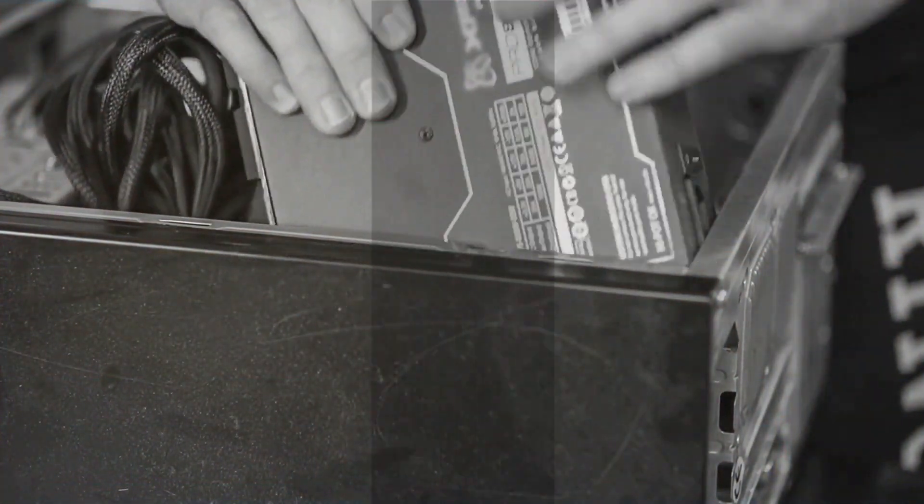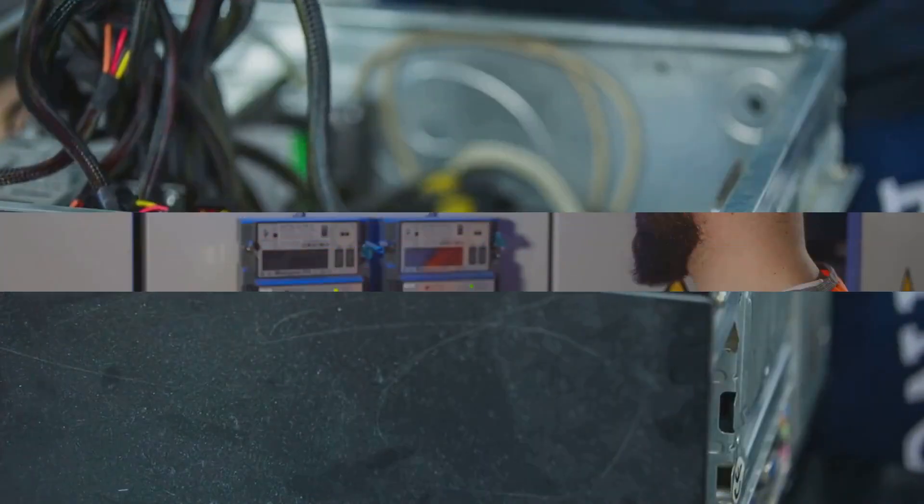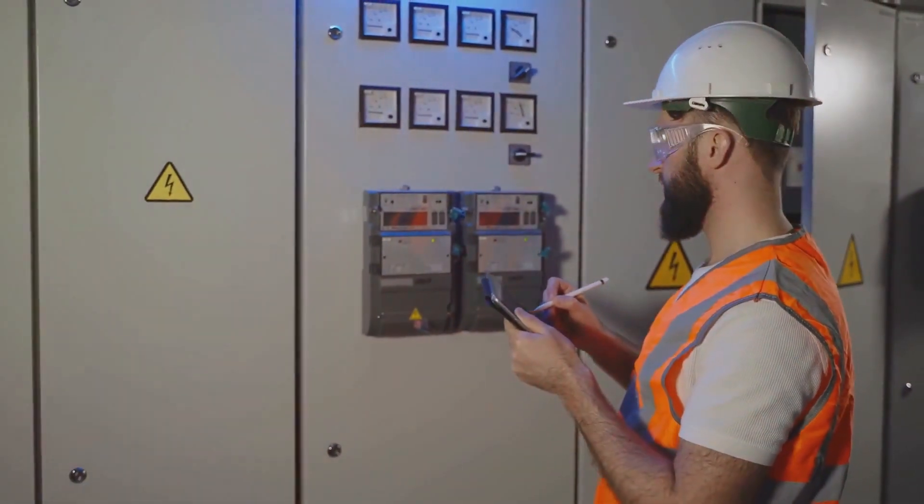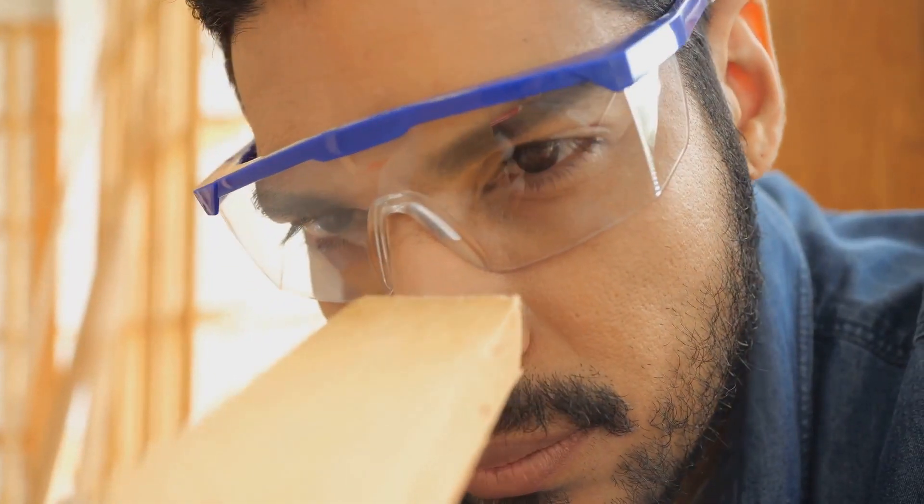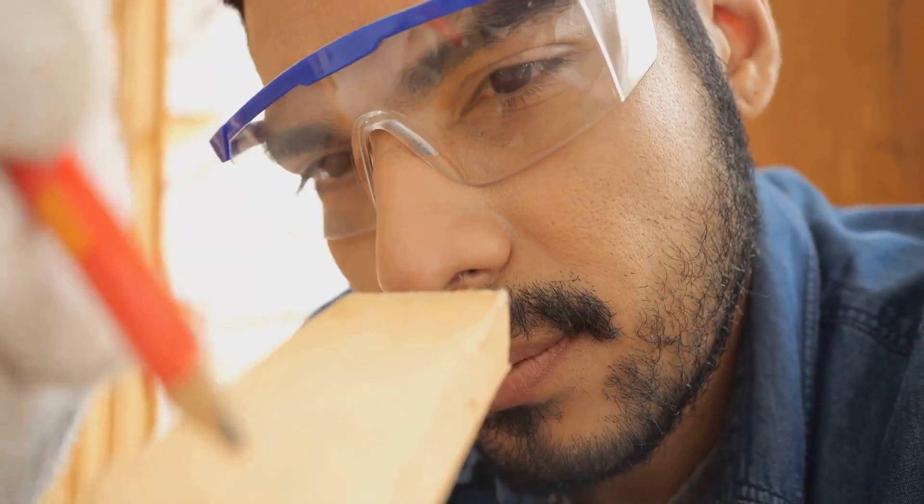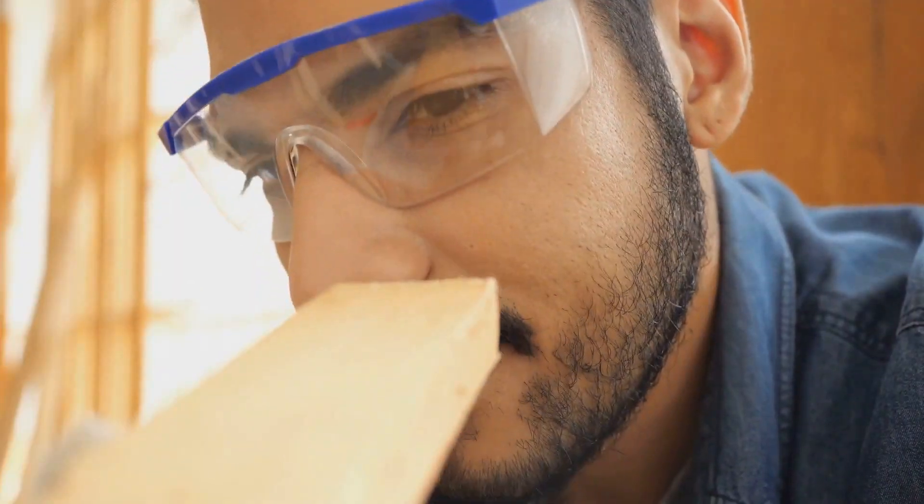And there you have it folks, you've successfully learned how to check a solenoid coil using a multimeter. Congratulations. Remember, each step is crucial, from safety measures to interpreting resistance values. Continue applying this knowledge, keep exploring, and never stop learning.